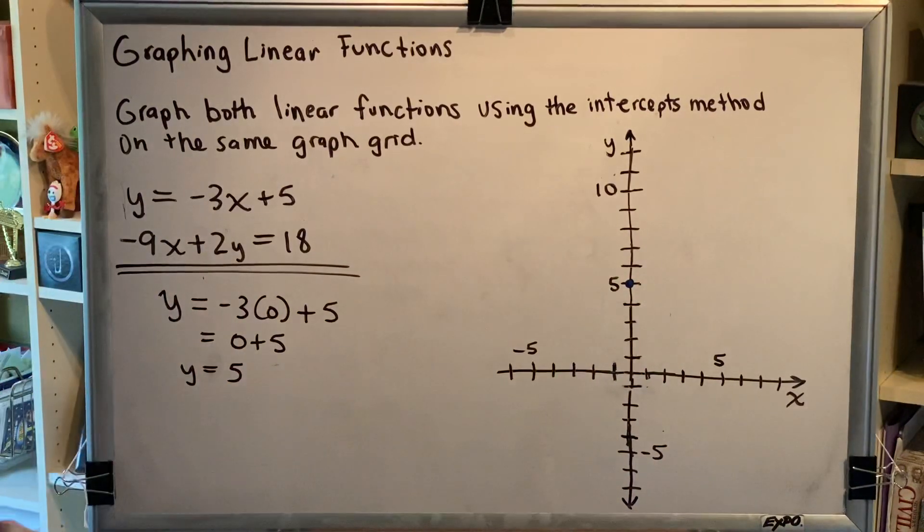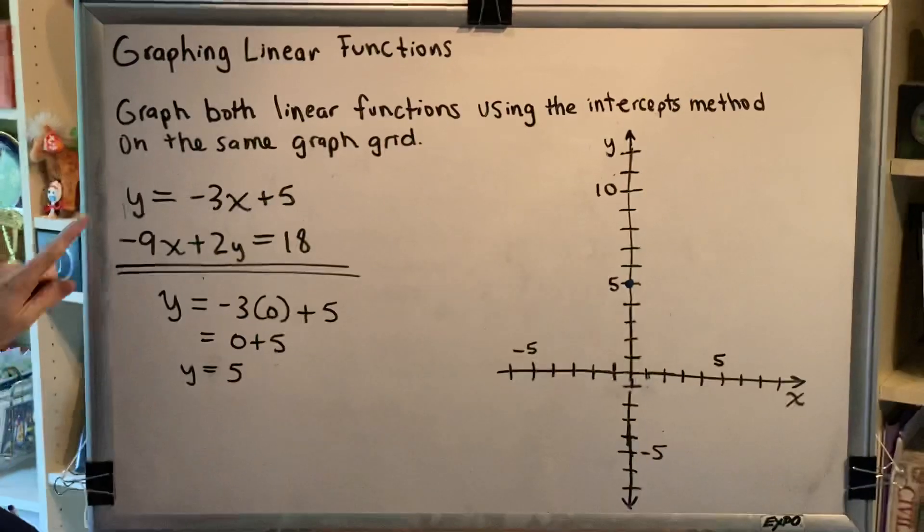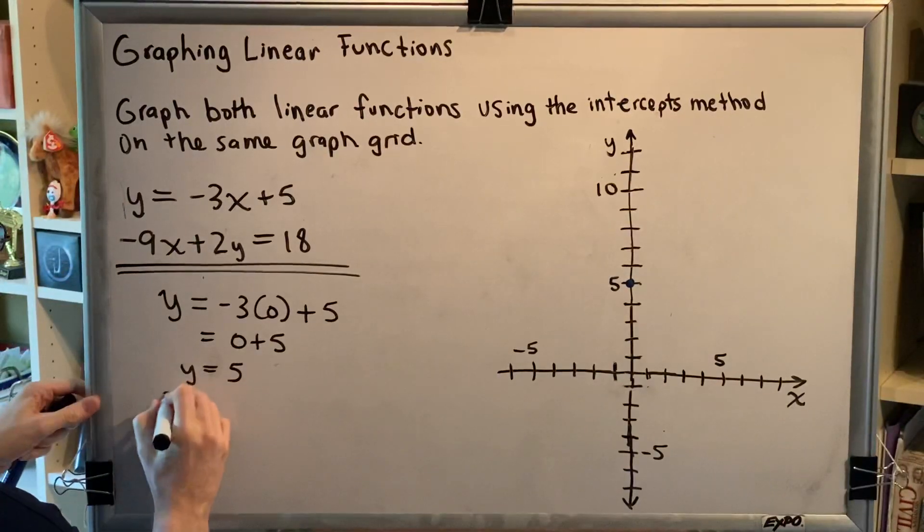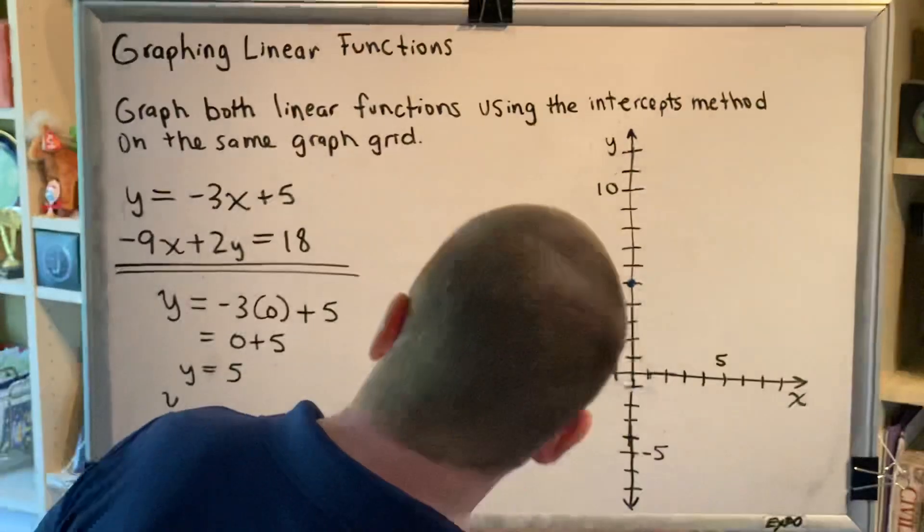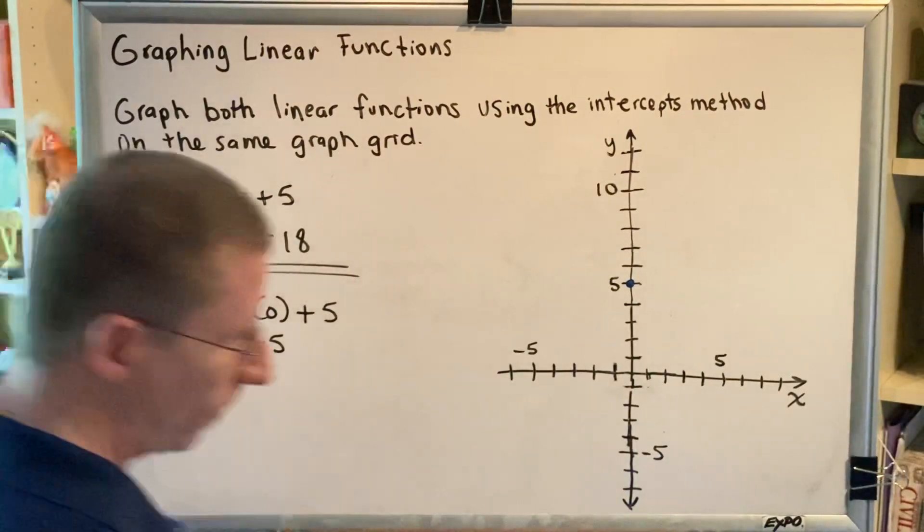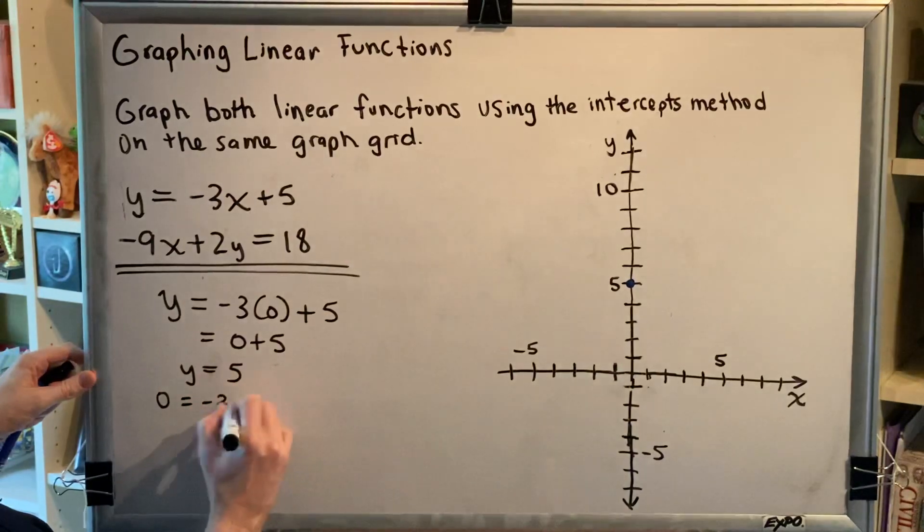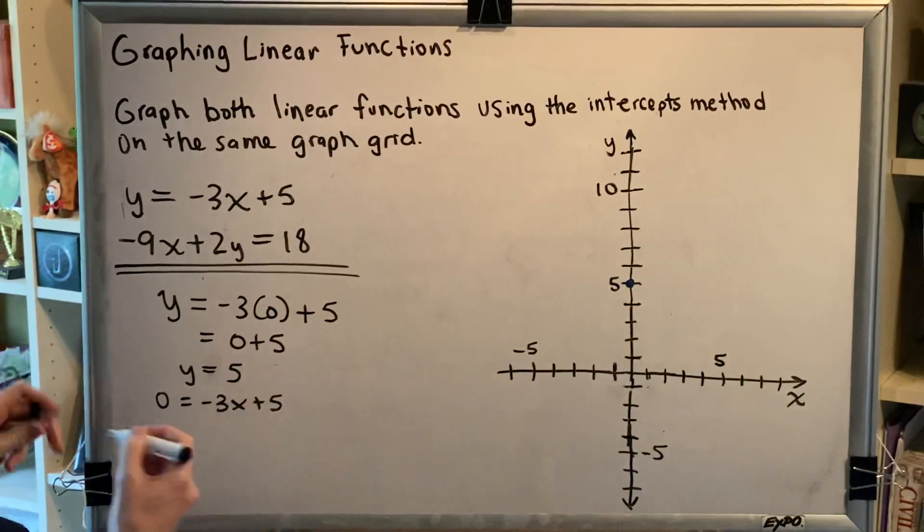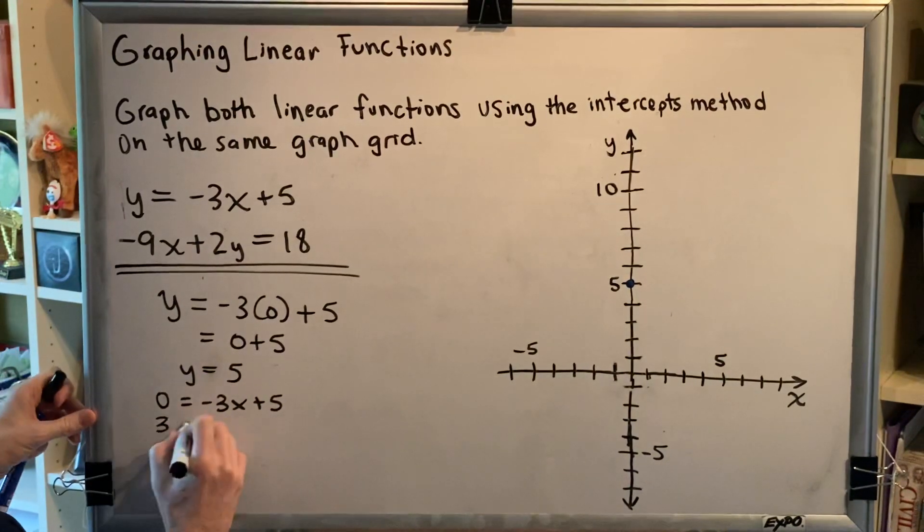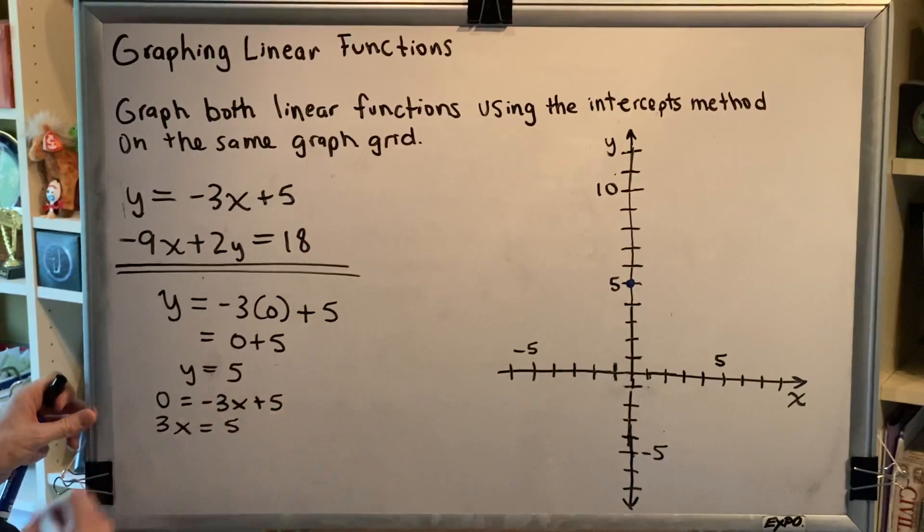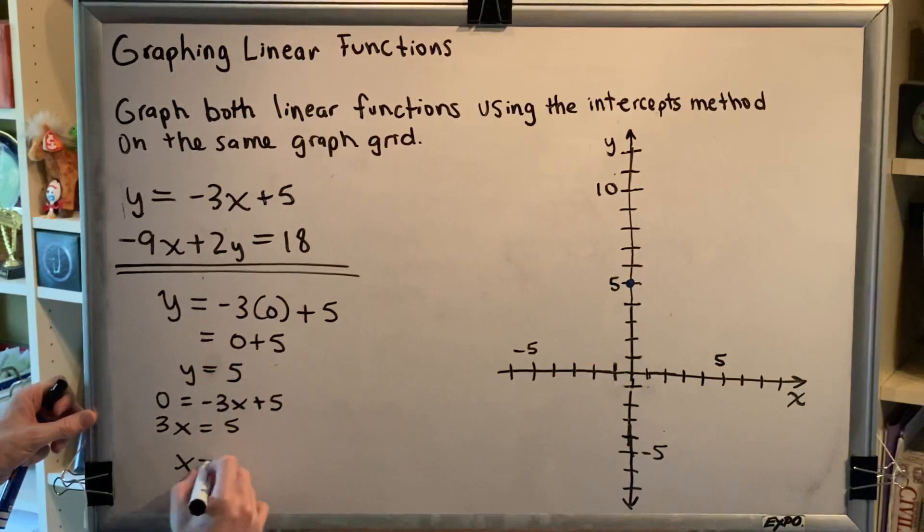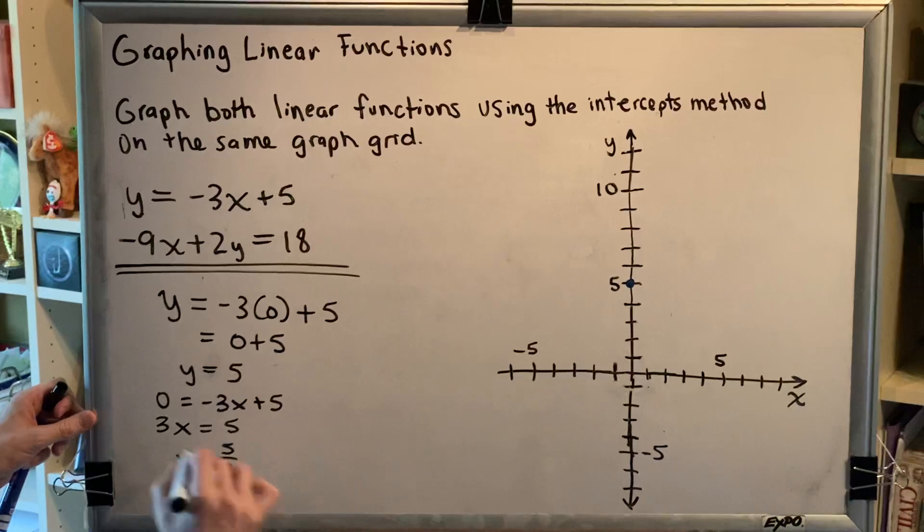I can now do the same thing with the other value. This time I will replace the y with zero and solve for the x. So replacing y with zero, I get zero equals negative three x plus five. Adding three x to both sides gives me three x equals five. Dividing by three on both sides gives me x equals five-thirds.